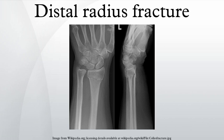The most common cause of this type of fracture is a fall on an outstretched hand. In young adults, this fracture is the result of moderate to severe trauma such as a fall from a significant height or a motor vehicle accident. The risk of injury is increased in patients with osteoporosis and other metabolic bone diseases.